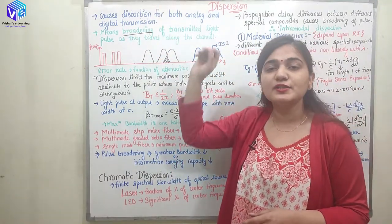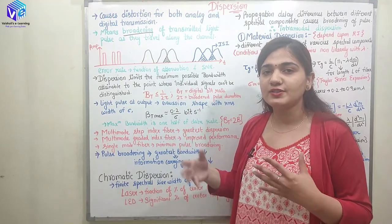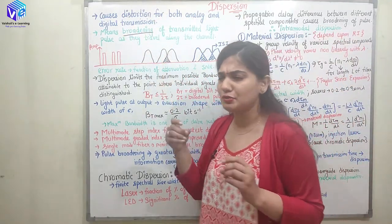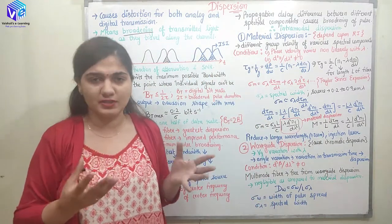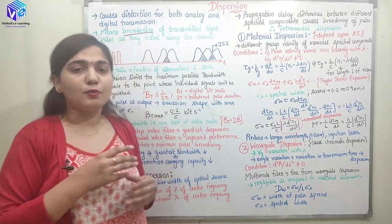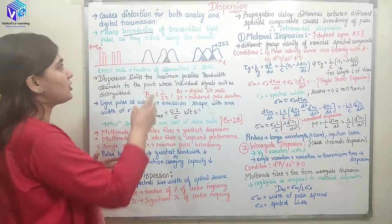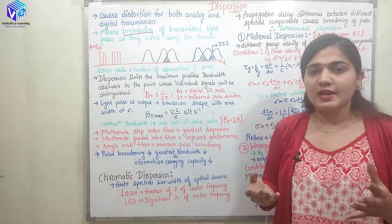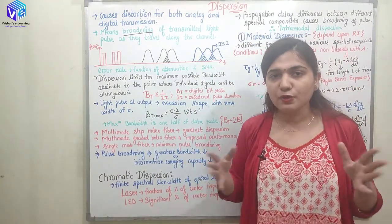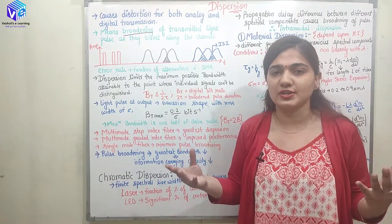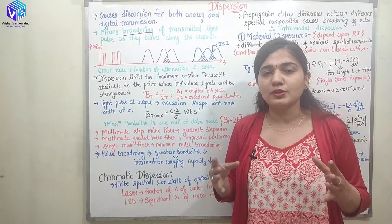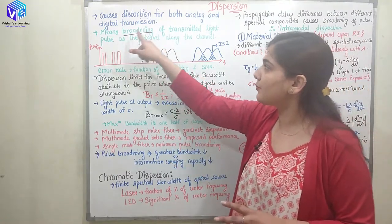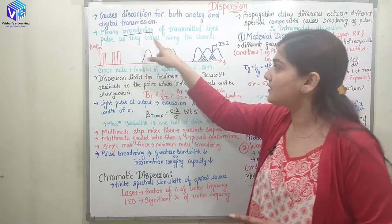Dispersion is a phenomenon that is causing the distortion in analog as well as digital signal transmission. It is the broadening of the transmitted light. Dispersion actually means the broadening of the transmitted light. When the transmitted light is broadened out or it spreads in the time domain, this effect is called dispersion. When the light is broadened out along the length of the fiber, it is going to produce some losses. It means the broadening of the transmitted light pulse as it travels along the channel.